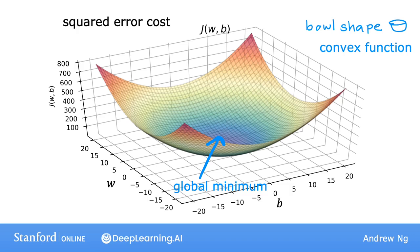So, when you implement gradient descent on a convex function, one nice property is that so long as your learning rate is chosen appropriately, it will always converge to the global minimum.